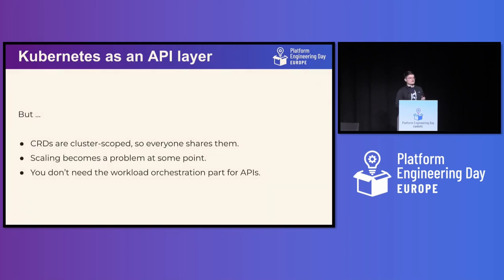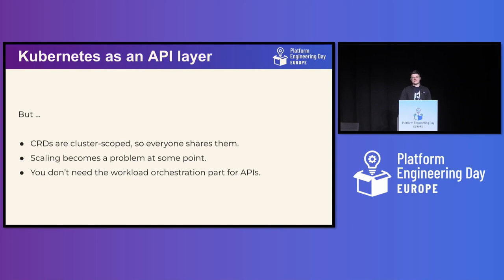However, I think most of you have already encountered one or more of these problems. Managing CRDs in a cluster with a lot of users can be cumbersome, because teams want to use their own versions of something. CRDs are cluster scoped, other resources might be cluster scoped, and running them can create conflicts. And even though scaling the Kubernetes API is great, it's meant as a container orchestration platform — it's not meant to be scaled globally. So at some point, scaling it can pose quite a challenge.